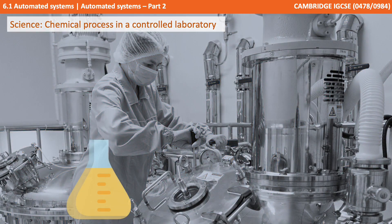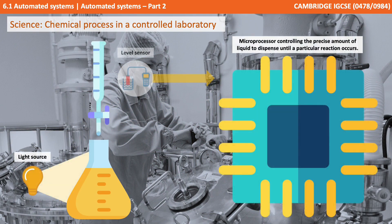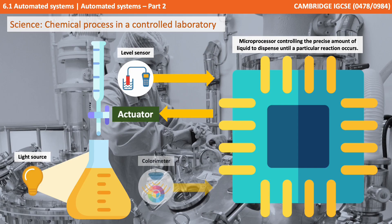Automation is massively used in the field of science, and there are literally thousands of examples. The one shown here is of a chemical process in a controlled laboratory, where the microprocessor controls the precise amount of liquid to dispense until a given reaction occurs, using a series of sensors to measure the liquid and the reaction state.